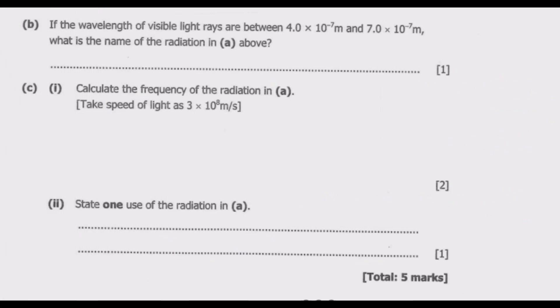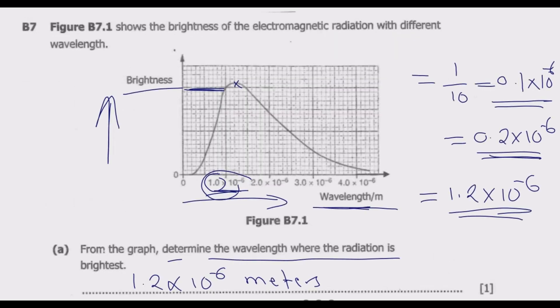Question B: If the wavelength of visible light rays are between 4.0 times 10 to the power negative 7 meters and 7.0 times 10 to the power negative 7 meters, this one is much more smaller than the one that we've found. What is the name of radiation in A above? The visible light is this, which is basically slightly smaller than the one that we have here. So this one is slightly bigger.